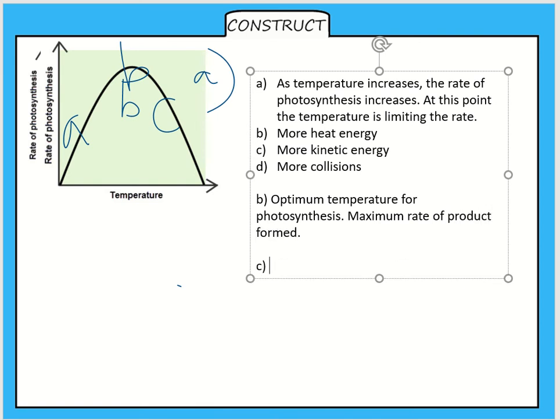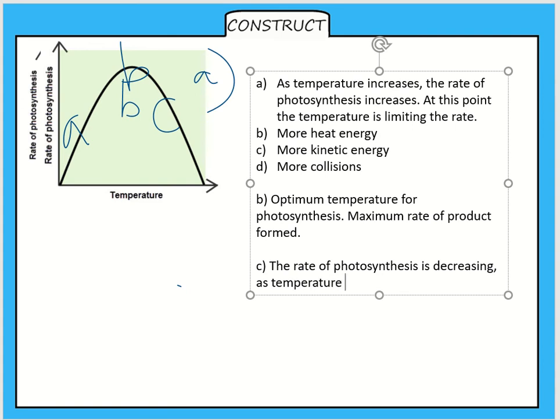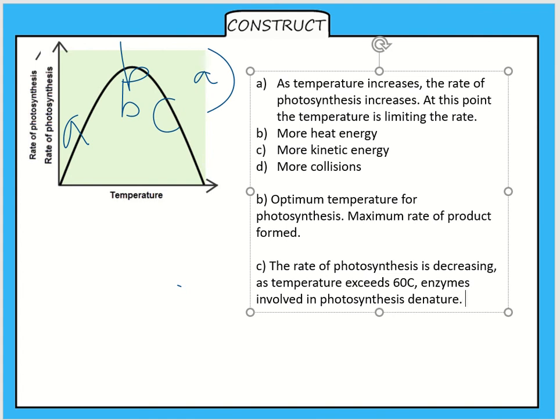At C you can see that the rate of photosynthesis is decreasing. The rate is decreasing because the line's going down. So something's wrong, the rate is going down. That means that oxygen and glucose are no longer being made or they're being made at a slower and slower rate. This is because as temperature exceeds 60 degrees, enzymes involved in photosynthesis denature, which means the product can no longer form.